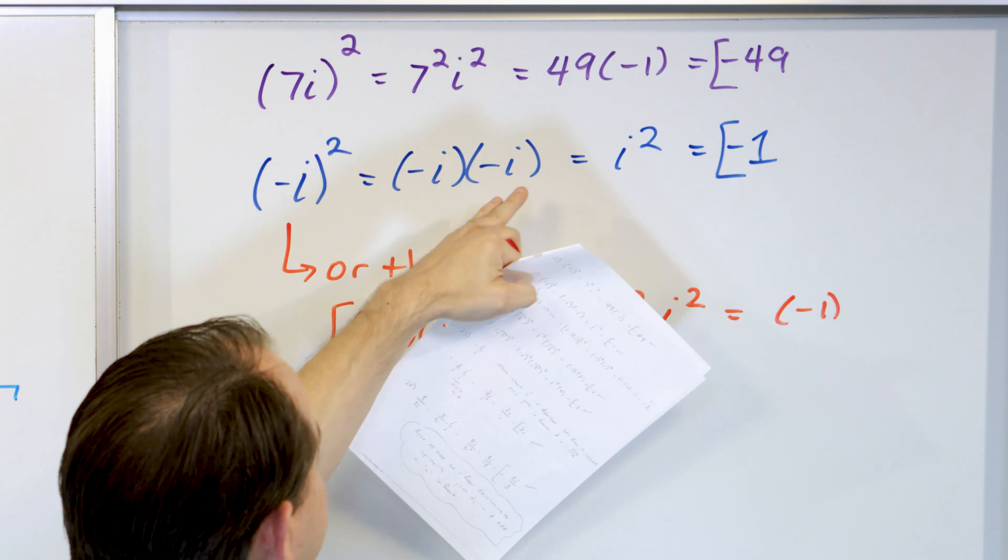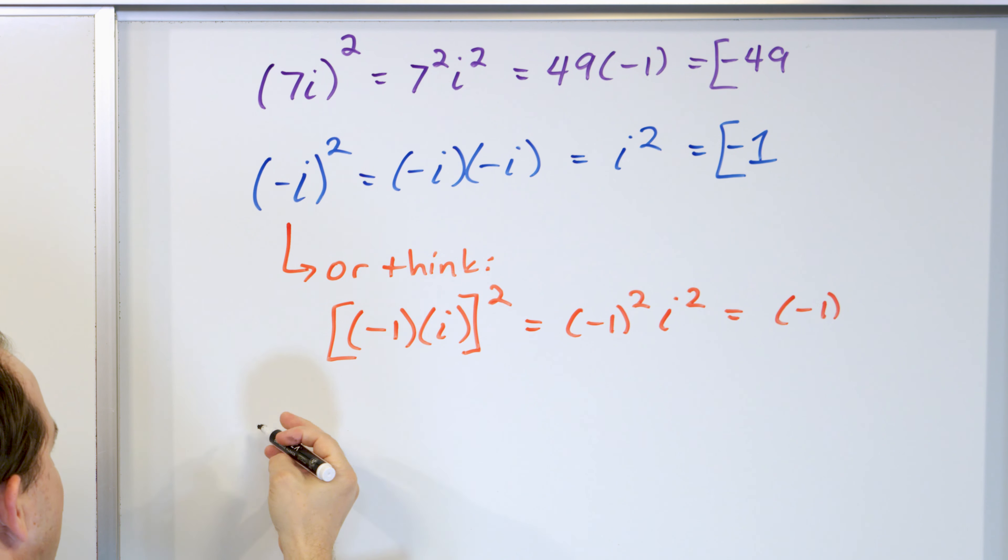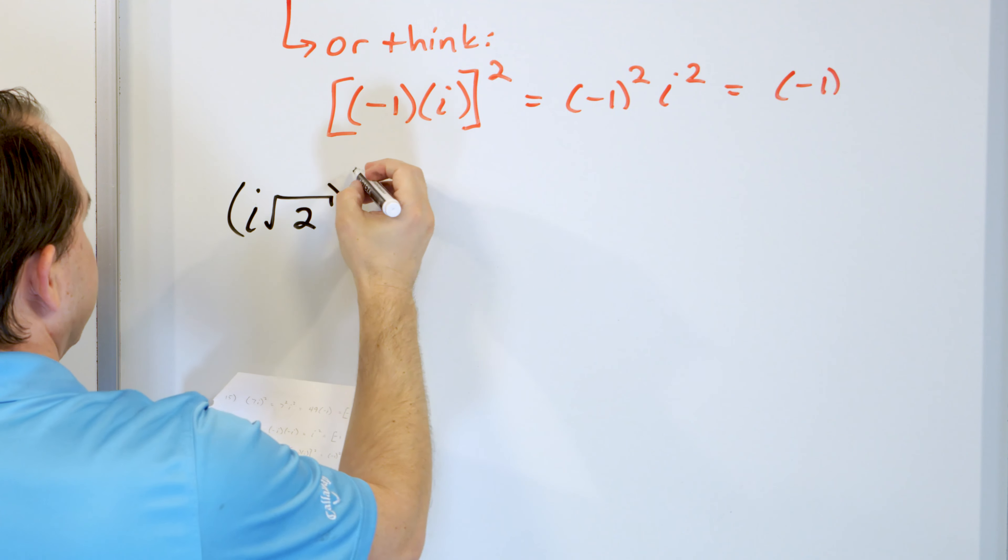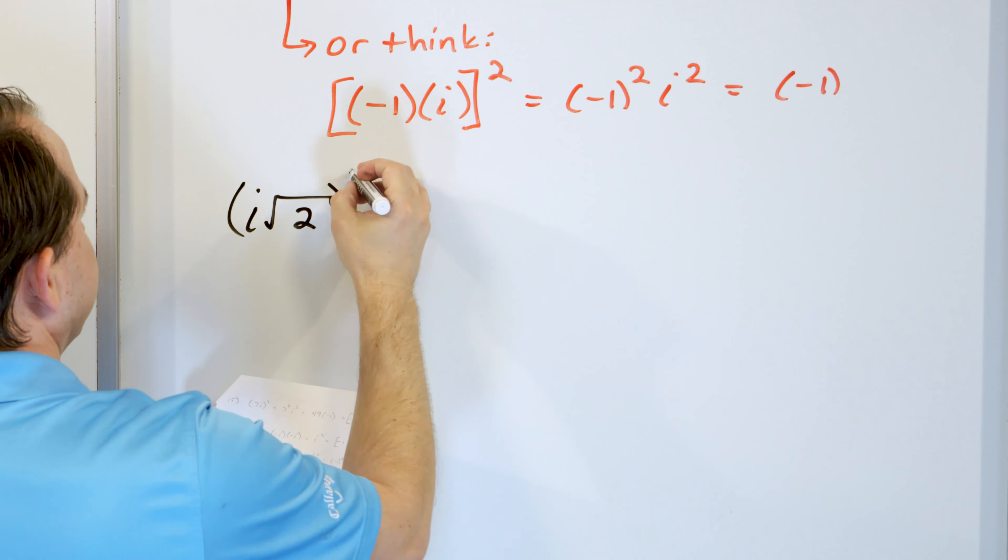What if we have negative i quantity squared? You can think of it as negative i times negative i. Negative times negative is positive, and i times i is i squared, so you get positive i squared, which equals negative 1. Alternatively, write negative i as negative 1 times i, all squared. The square applies to negative 1 giving positive 1, and to i giving i squared which is negative 1. Either way the final answer is negative 1.